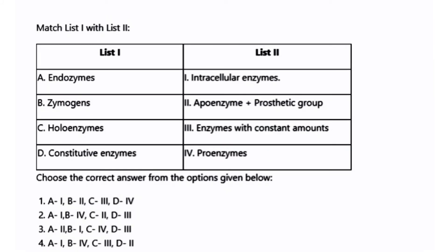The next question is to match List 1 — endoenzymes, zymogen, holoenzymes, constitutive enzymes — with List 2 — intracellular enzymes, apoenzyme plus prosthetic group, enzyme with constant amount, and proenzymes. The correct answer is option 2: endoenzyme is intracellular enzyme, zymogen is proenzyme, holoenzyme is apoenzyme plus prosthetic group, and constitutive enzyme is enzyme with constant amount.